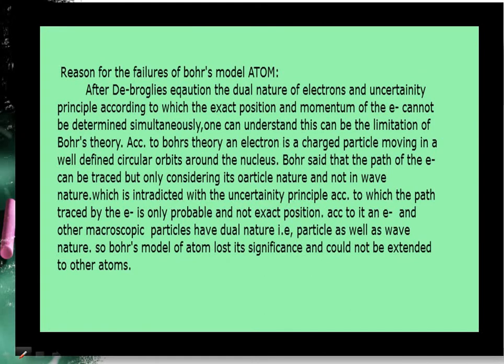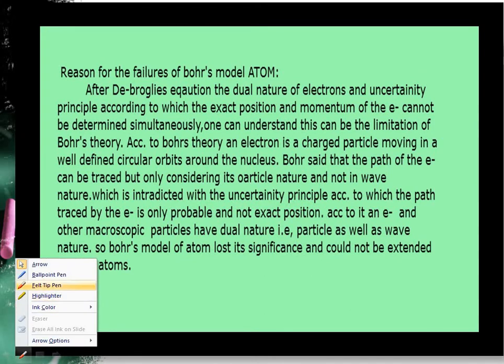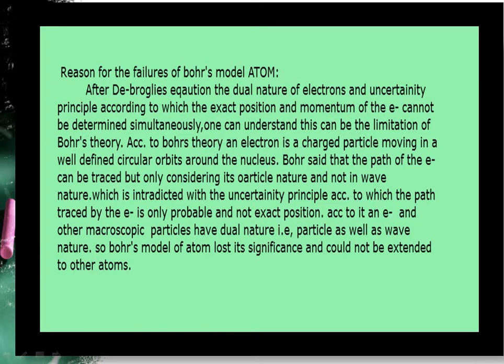In this lecture, we will learn how Bohr's theory, which we have studied about angular momentum and orbit, that electron is fixed path. What are the failures of that model? First of all, we will talk about de-Broglie relation because we have read the last section, de-Broglie equation according to matter's dual nature.